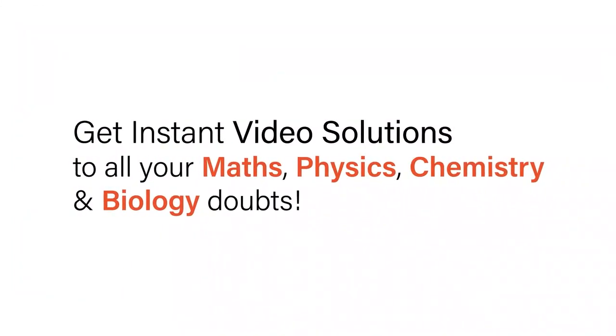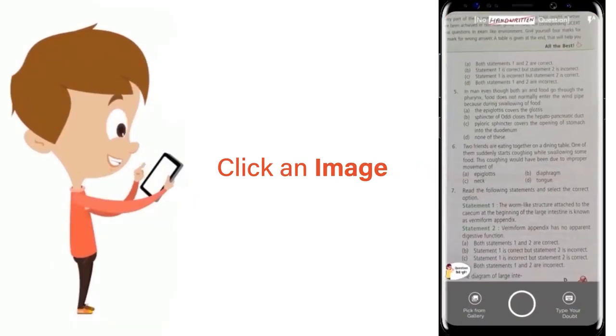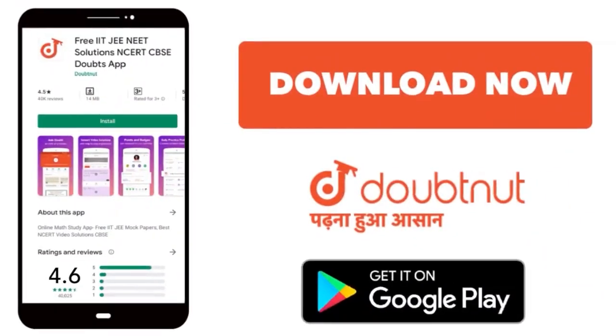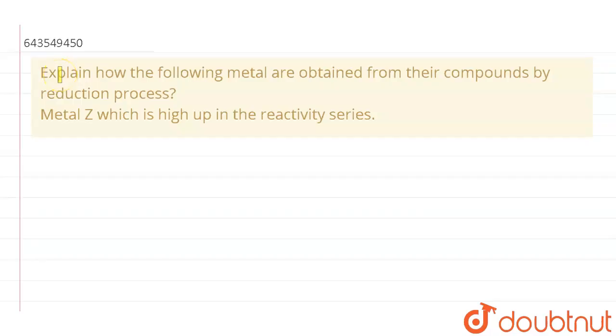With Doubtnit, get instant video solutions to all your maths, physics, chemistry and biology doubts. Just click the image of the question, crop the question and get instant video solution. Download Doubtnit app today. Hello, the question says explain how the following metal are obtained from their compounds by reduction process.